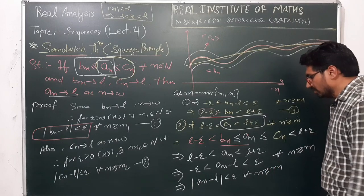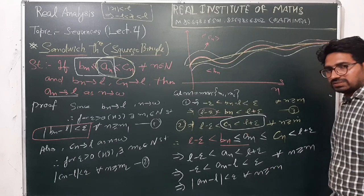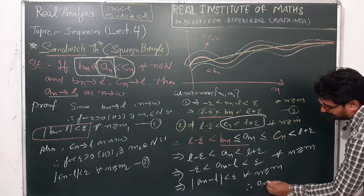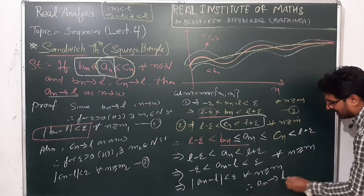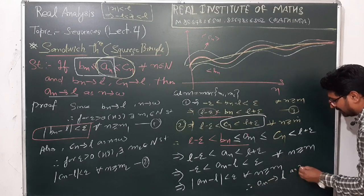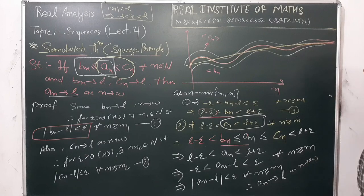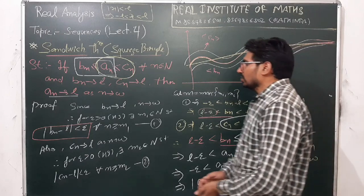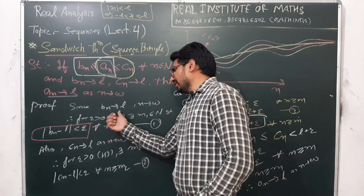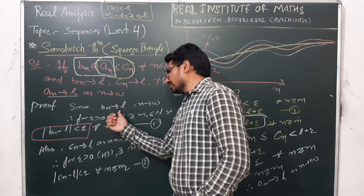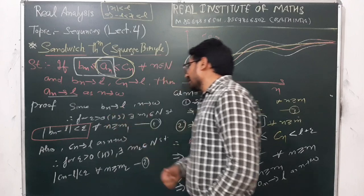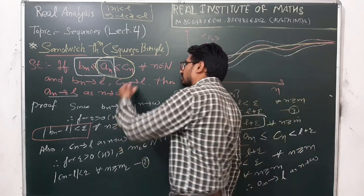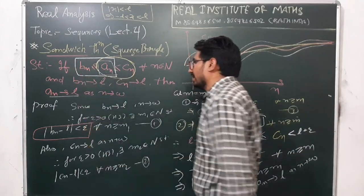And what is this? This is the definition of a convergent sequence. Therefore we can say that an converges to l as n approaches to infinity. Very simple — if bn converges to l and cn converges to l, it means that the middle sequence will also converge.